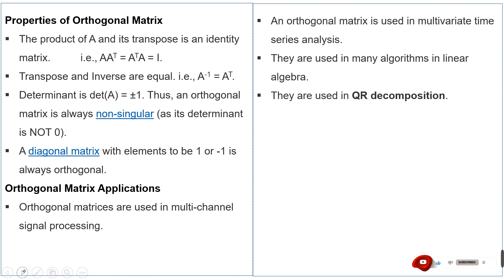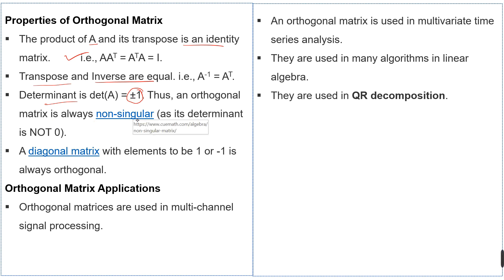Now we have the properties of the orthogonal matrix. First, the product of A and its transpose is an identity matrix — this is the definition we already studied. Next, the transpose and the inverse of the matrix are equal. The determinant of any orthogonal matrix is plus or minus 1, meaning it could be 1 or minus 1. Thus an orthogonal matrix is always non-singular.